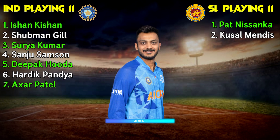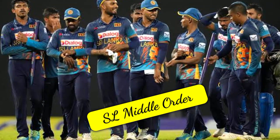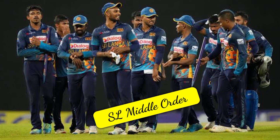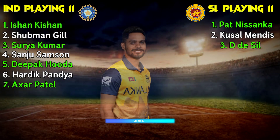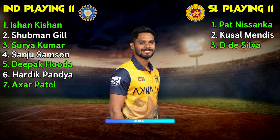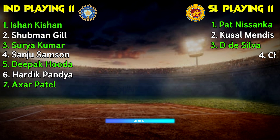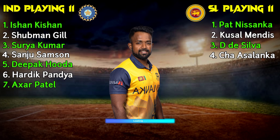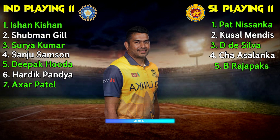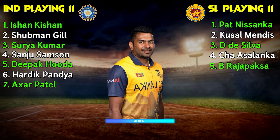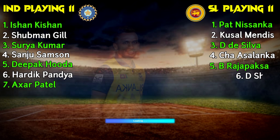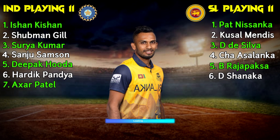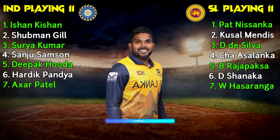India middle order continued: number seven Axar Patel, all-rounder. Sri Lanka team middle order: number three Dhananjaya de Silva, right-hand batsman; number four Charith Asalanka, left-hand batsman; number five Bhanuka Rajapaksa, left-hand batsman; number six Dasun Shanaka, all-rounder.